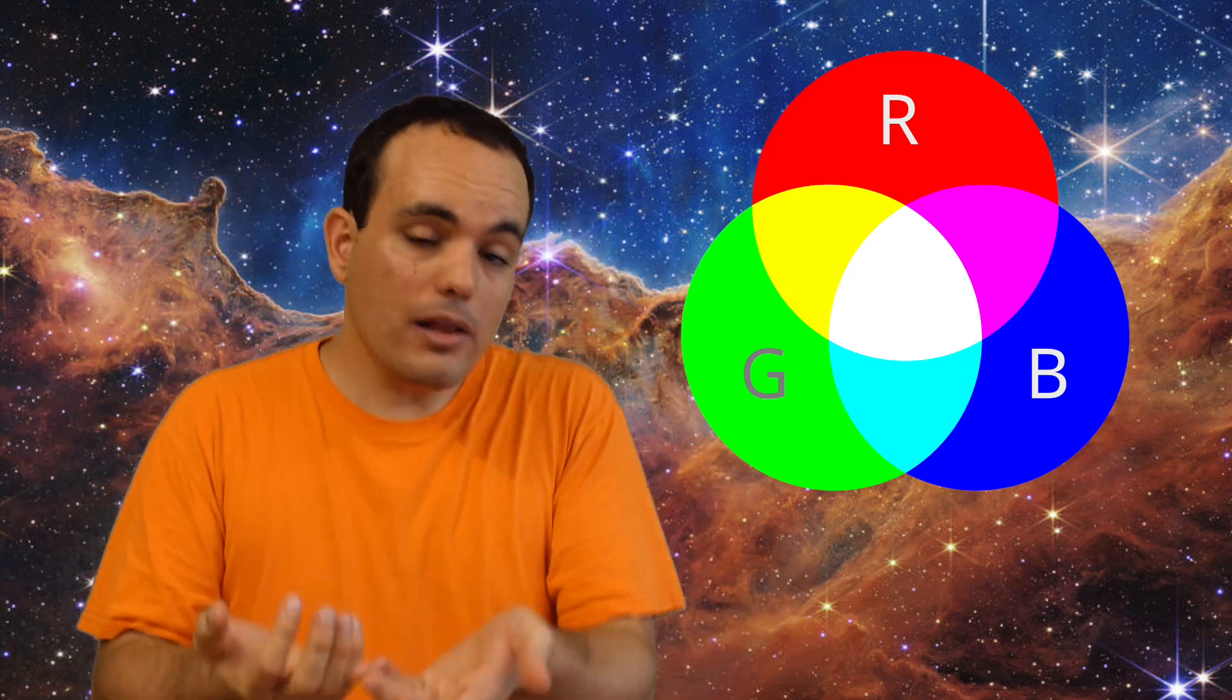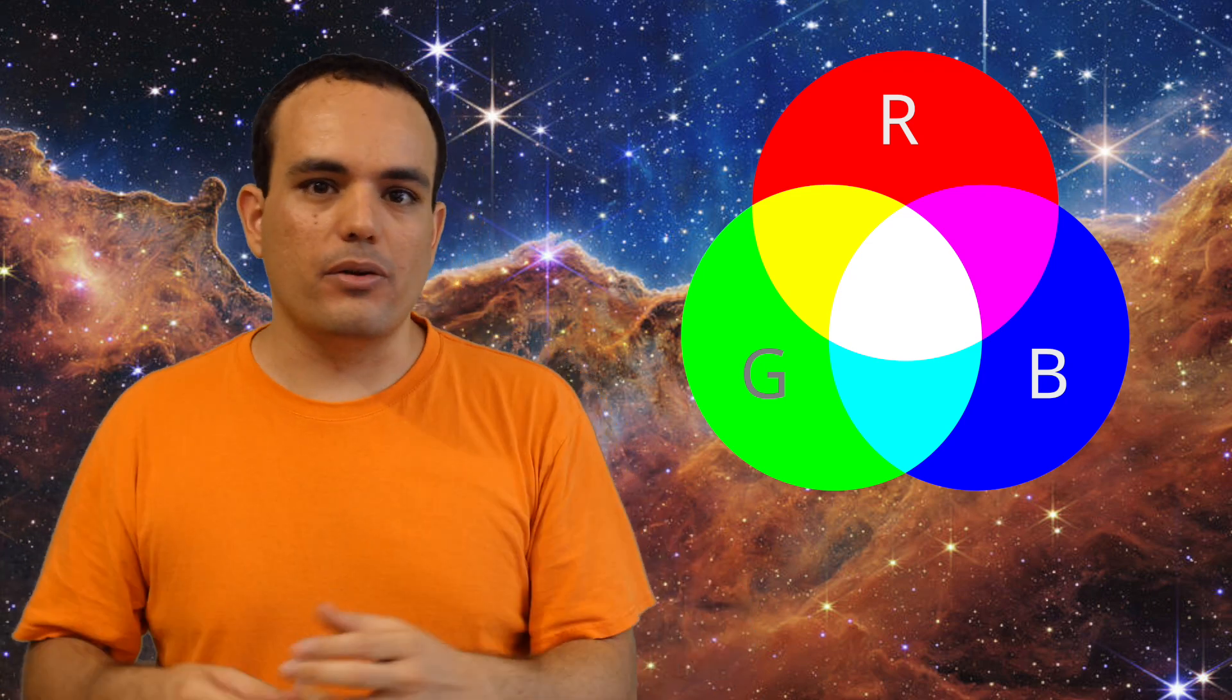Color charge comes in three different kinds, red, green, and blue, and they have these names because of an analogy to how light works. If you have red, green, and blue light, and you combine them, it will look white. So in a sense, the colors canceled out. And well, if you have quarks, each with one different color charge, their fields will also cancel out. So it's sort of like white. That's the idea behind these names.